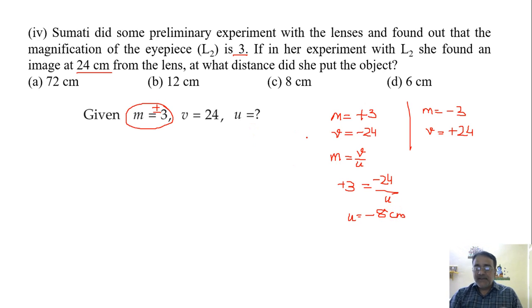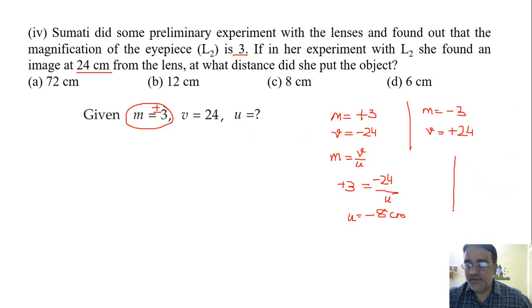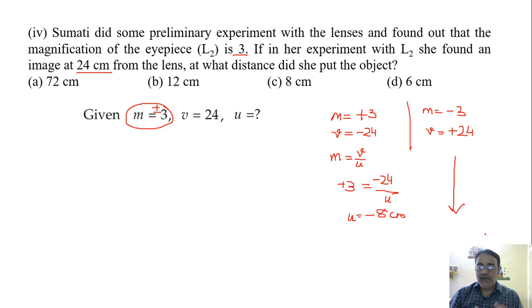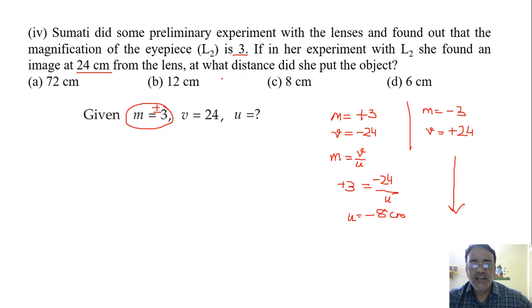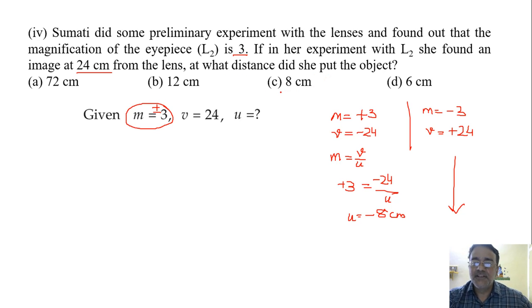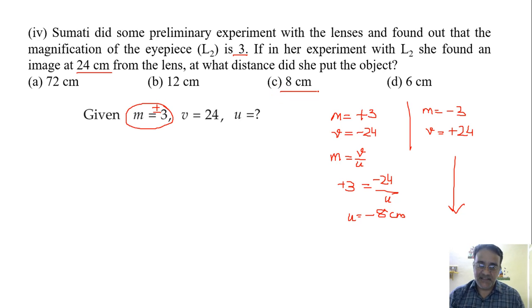So the answer is u = -8 cm. While writing the statement answer, we say she put the object at a distance of 8 cm from the lens.